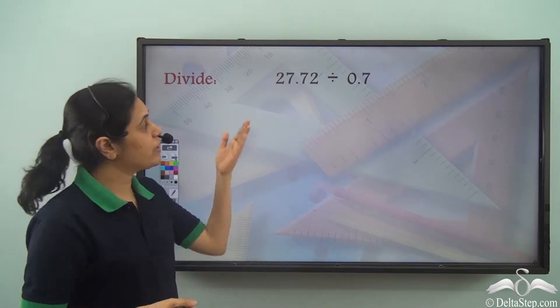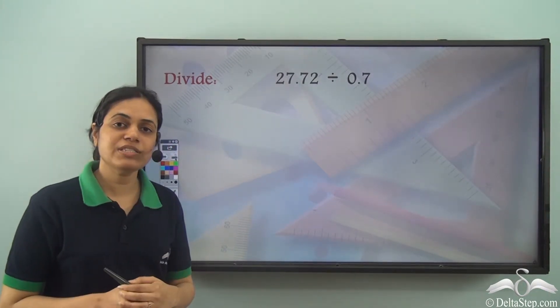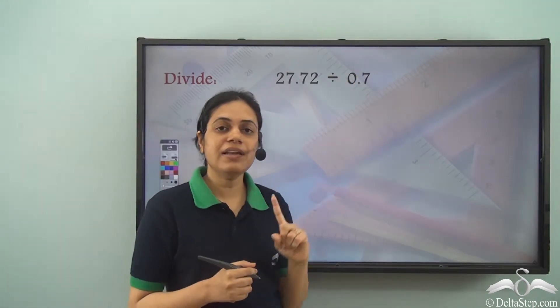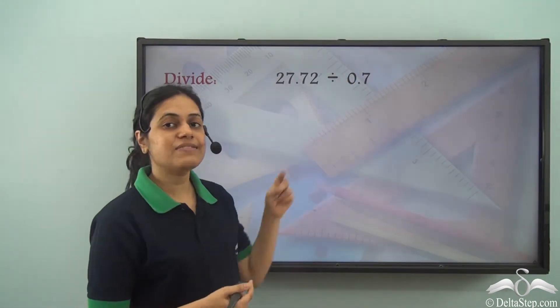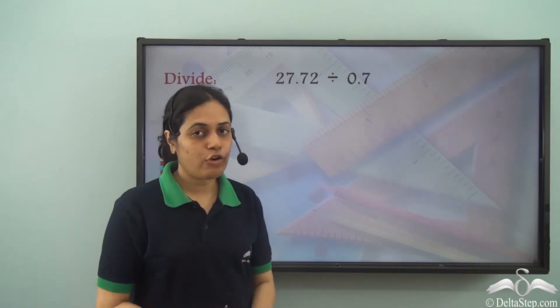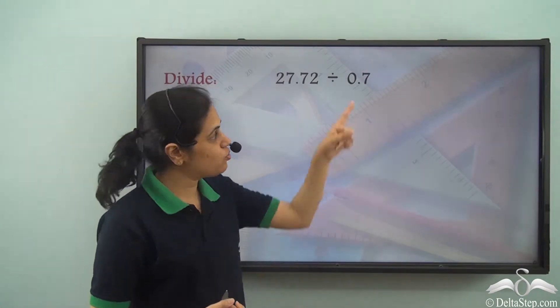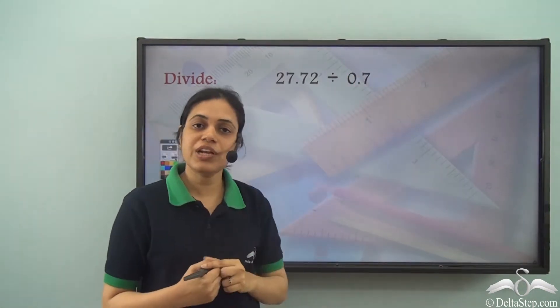Now what is 27.72 divided by 0.7? In this case, there is a decimal number in the divisor as well as in the dividend. We already know that when there is a decimal number in the divisor, we need to bring the decimal point to the right.